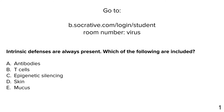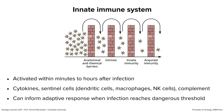Quiz question: intrinsic defenses are always present — which of the following are included? Antibodies, T cells, epigenetic silencing, skin, or mucus? The answer is C — epigenetic silencing is part of intrinsic defenses. Antibodies are adaptive, tailored to the pathogen. Skin is what I call a physical defense, defined as something before intrinsic on the first slide.